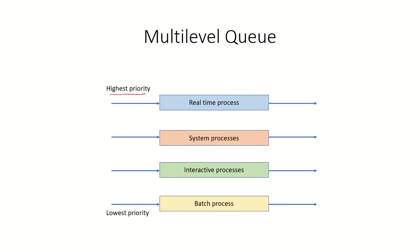How are these multi-level queues defined? The highest priority can be given to real-time processes, because these have a deadline and must be executed before it. System processes running in kernel mode can be given the next priority. Then come interactive processes, and finally batch processes — which do not have much urgency and can be given the lowest priority.